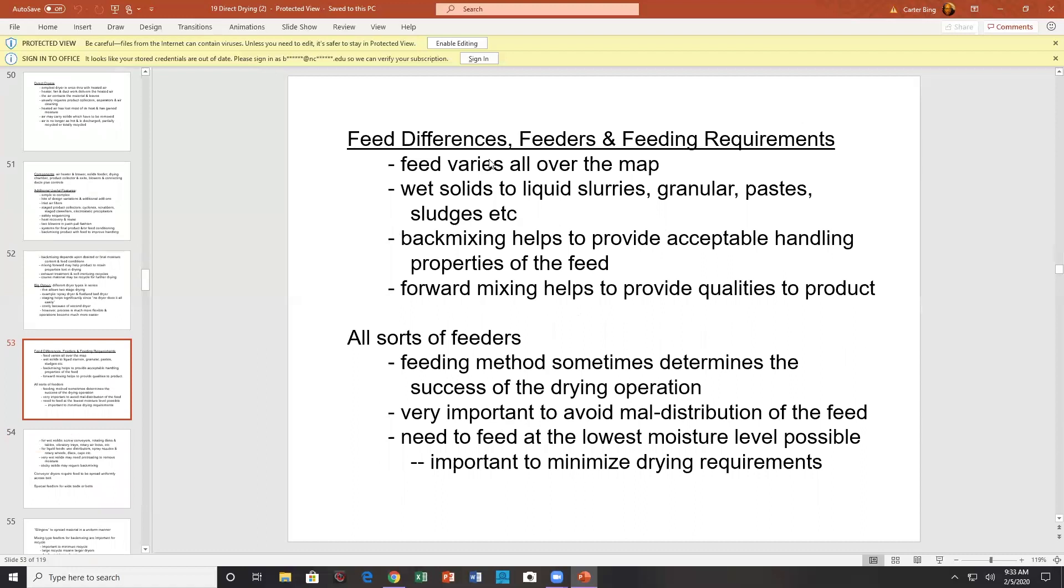Feed differences. Feeders and feeding requirements. Feed may vary all over the map. Wet solids to wet slurries. Back mixing helps, may help improve acceptable handling properties. Feed forward may help qualities to the product. All sorts of feeders. Feeder method sometimes determines the success of the operation. Very important to avoid mild distribution of the feed. Need to feed at the lowest moisture level possible. Again, you may have a dewatering device ahead of your dryer. Take out a lot of the water that way. Simple allowing the feed to drain would be also a way to remove moisture. Important to minimize drying requirements.